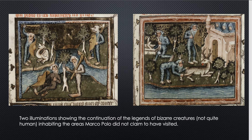He never mentions the practice of foot binding, which was practiced on women of high social status and fascinated all other Europeans who traveled to China. He never mentions the use of chopsticks to eat with. And finally, he fails to mention the Great Wall of China — and as I said, he claimed to live there for 17 years and moved around a lot, describing many different places. So why would he not mention the Great Wall of China?